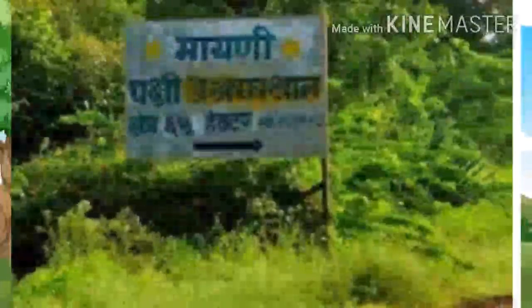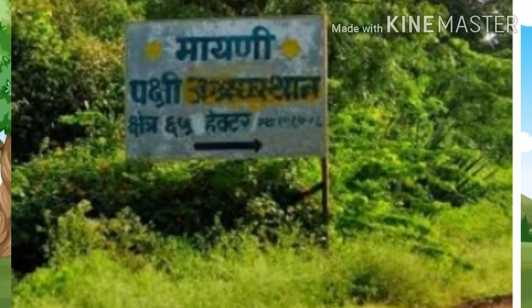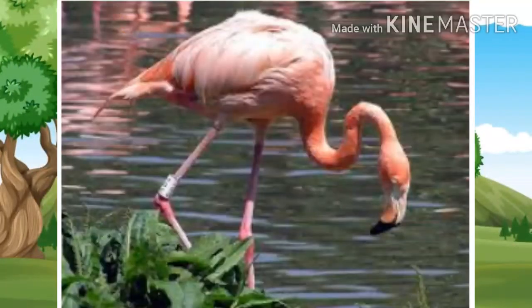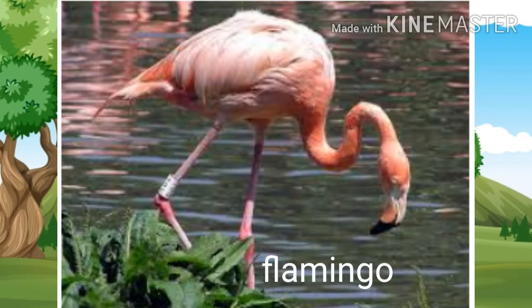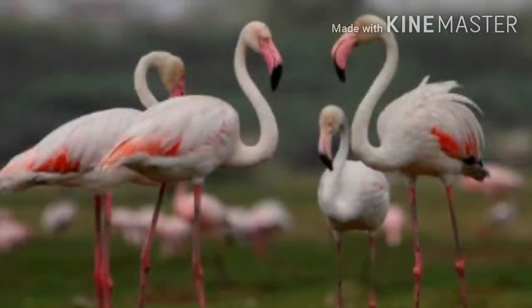Mayani Lake has formed due to a dam built on the Chand river in Satara district. Flamingos from the Siberia region in northern Asia migrate to this lake. Here they build nests and lay eggs, and once the baby birds grow big enough, they return with them to Siberia. As the water level in the dam had fallen, the flamingos had stopped coming. However, the lake has now been declared a sanctuary for birds.